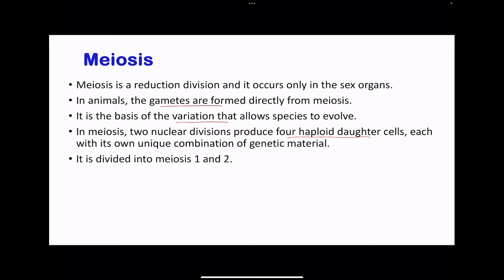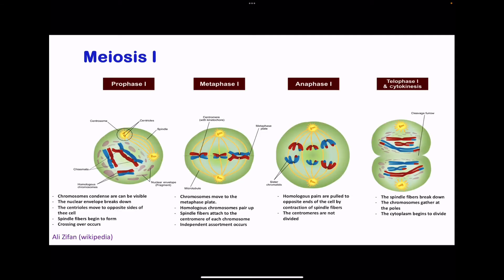We're going to look at meiosis I and meiosis II. In meiosis I, we'll look at prophase I, metaphase I, anaphase I, and telophase I, accompanied by cytokinesis. In prophase I, the chromosomes are condensed and can take up stain, making them visible. The centrioles move to opposite sides of the cell, and spindle fibers form between them. Crossing over also occurs during prophase I, when non-sister chromatids exchange genetic material. This process is controlled by enzymes that cut specific areas of the non-sister chromatids to create various combinations.